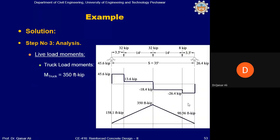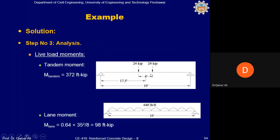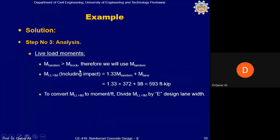For the live load, the design truck moment calculates to 354 ft-kip, and the design tandem moment is 301.2 ft-kip — wait, the tandem moment is actually higher at 372 ft-kip, so the tandem controls over the truck. The lane moment is 0.64 × 35²/8 = 98 ft-kip. Since M_tandem > M_truck, the tandem is used. MLL + IM = 1.33 × 372 + 98 = 593 ft-kip. This 593 ft-kip is then divided by the design lane width E.